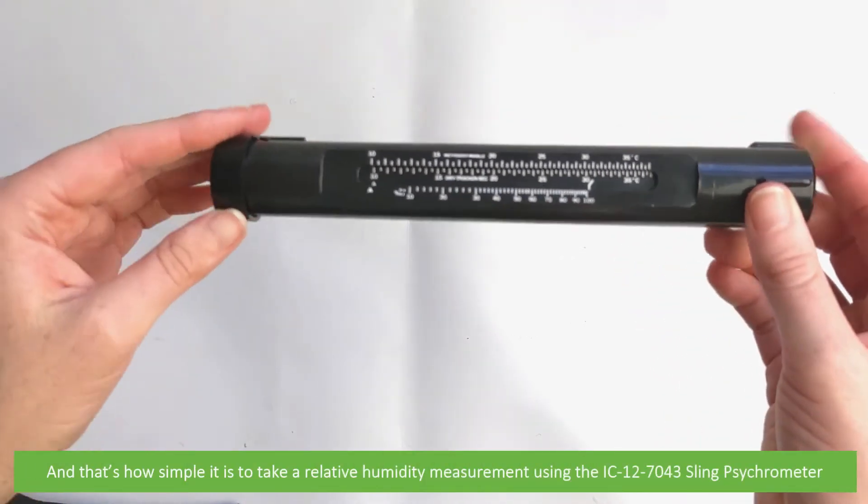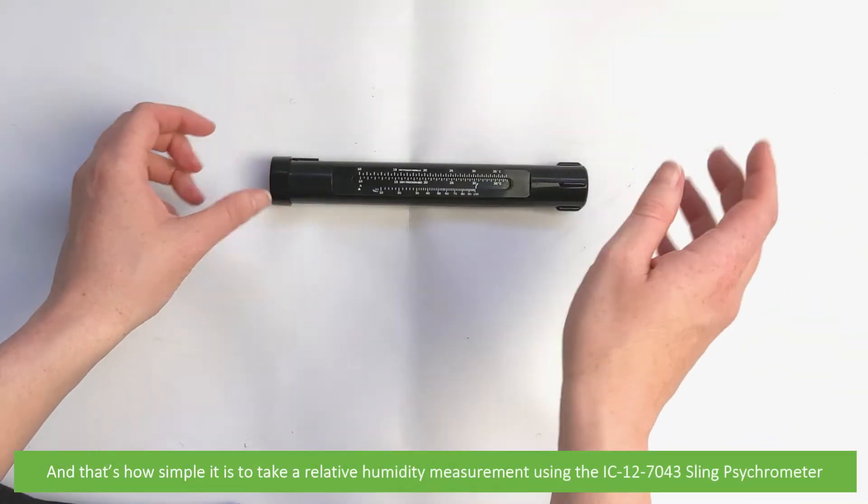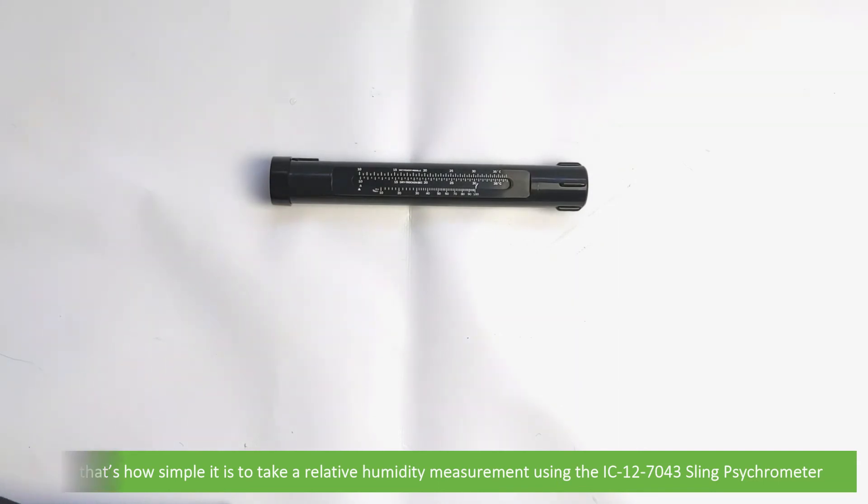And that's how simple it is to take a relative humidity measurement using the IC-12-7043 sling psychrometer. For more information on this meter, including specifications and further features, see the links in the video description. We hope you found this video helpful. Thanks for watching!